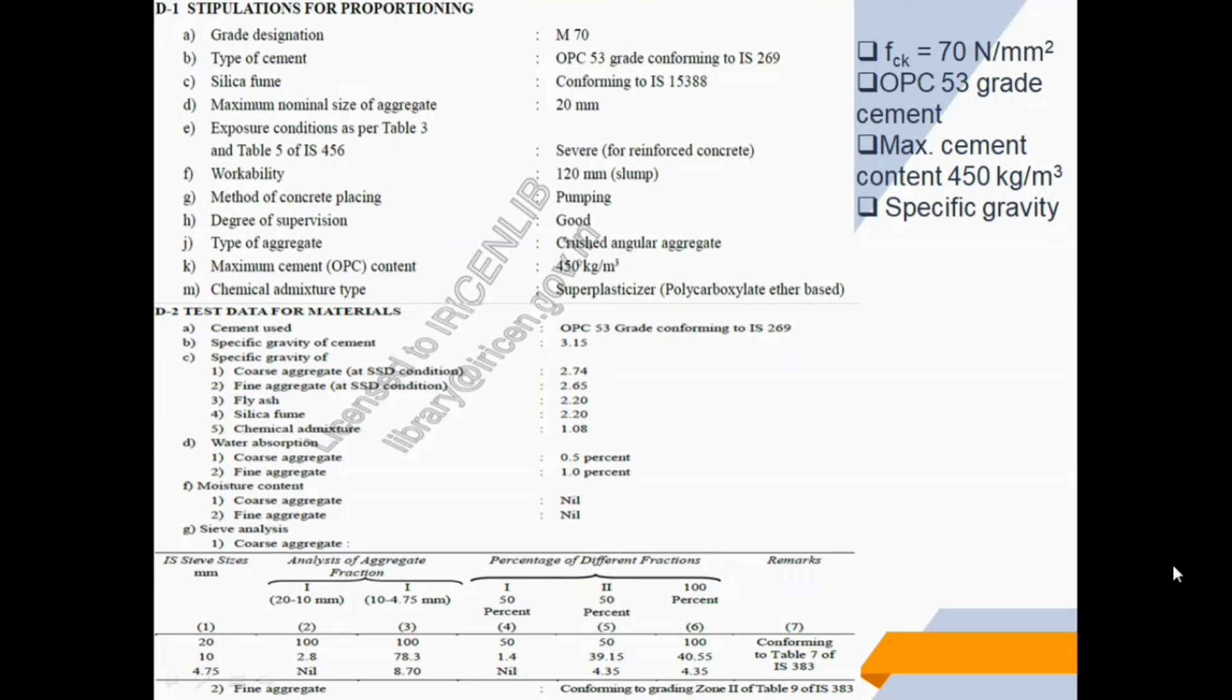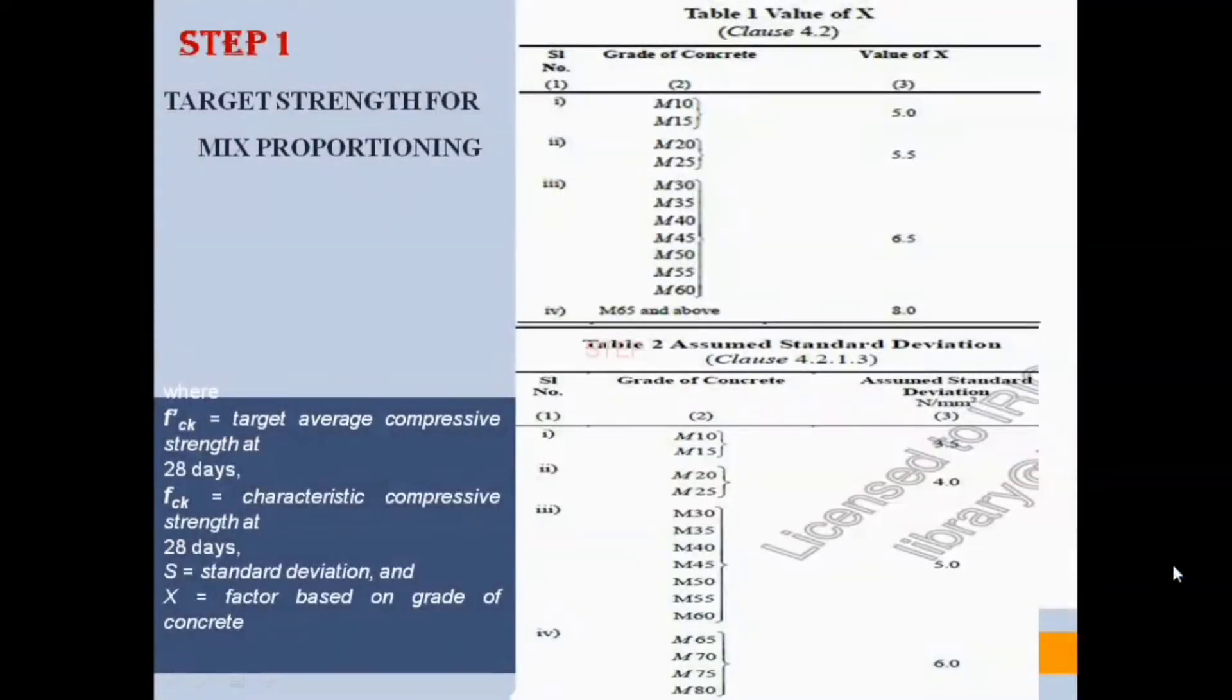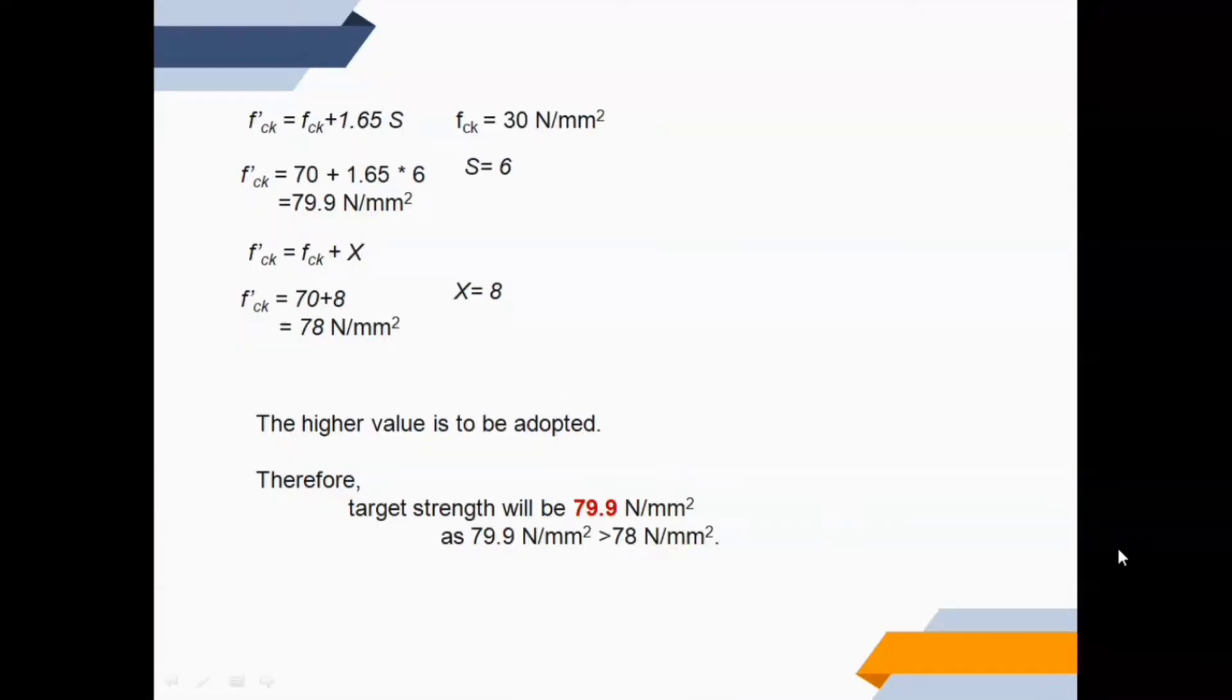Let us start the mix design calculations. Step 1: Target strength for mix proportioning. F CK prime equals F CK plus 1.65 S, or F CK prime equals F CK plus X, consider whichever is higher. By referring these tables, you get S equals 6 and X equals 8. After calculating, target strength will be 79.9 N per square millimeter.